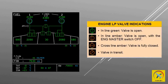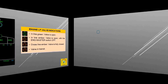There are two LP valves, also known as spar valves, which supply fuel to the respective engine. In-line green means the valve is open. In-line amber shows the valve is open with the engine master switch off. Cross-line amber shows the valve is fully closed. Half-open in amber shows the valve is in transit.